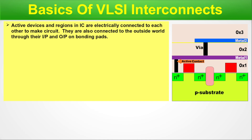This interconnection of active regions must also connect to the outside world through their input and output bonding pads. Active devices and regions in an IC are electrically connected to each other. They are also connected to the outside world through bonding pads. Contacts, vias, and interconnects are used for such connections. Depending on the position of the electrical connection, we call them contacts, vias, or interconnects.